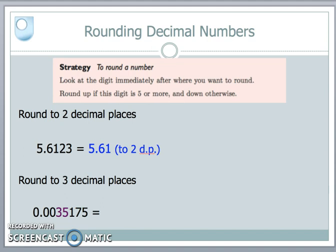My next number, I want to round to three decimal places. So let's apply the strategy. I want to round to three. So therefore, I shall look at the fourth one. The fourth one is a five. I apply my strategy. Is the digit five or more? Yes, it is. In this case, I shall round up.